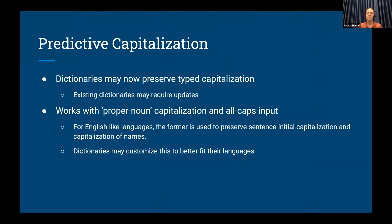Dictionaries may now preserve capitalization as typed. Existing dictionaries will require some updates to support this, although they are fairly simple updates — we just don't wish to accidentally cause a language to have capitalization that does not want it, because if the language doesn't normally have capitalization, those completely different-looking letters become a real problem. This works with proper noun style capitalization — as we'd recognize it in English, or sentence-initial — as well as all-caps input, and we do allow for some customization on exactly what that proper noun capitalization means for dictionary designers.